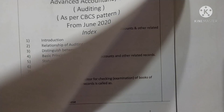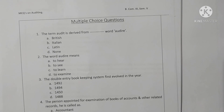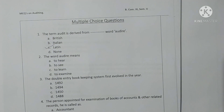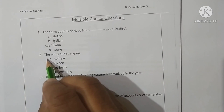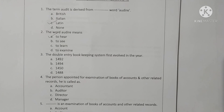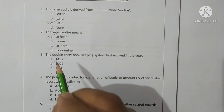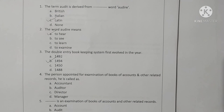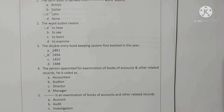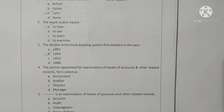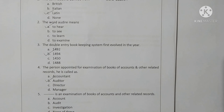We are going to the first question. The term audit is derived from the Latin word 'audire' — option C is correct. The word 'audire' means 'to hear' — option A is correct. The double entry bookkeeping system first evolved in the year 1494 — option B is correct. The person appointed for examination of books of accounts and other related records is called an auditor — option B is correct.